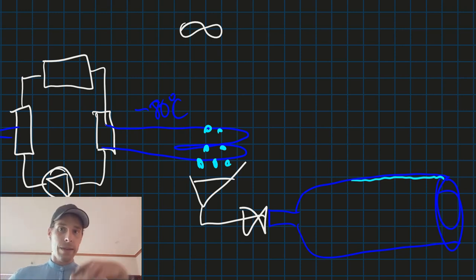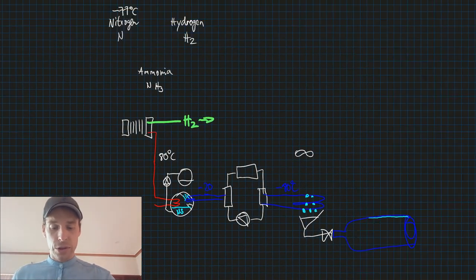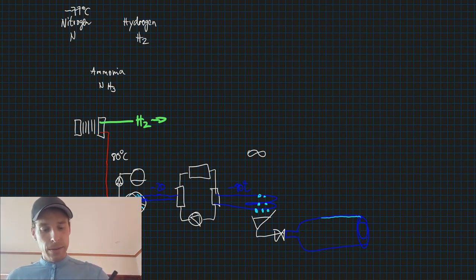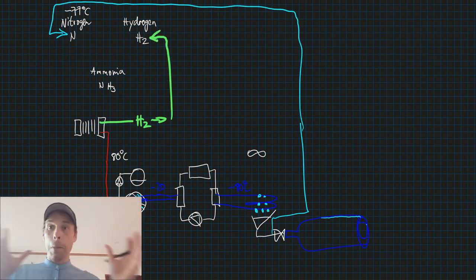Then we close the valve and the temperature rises. Naturally the nitrogen would like to evaporate, but it is a pressure vessel and the nitrogen cannot evaporate. So now we have our nitrogen for our ammonia production. The hydrogen we have from the electrolysis of water. Now how to combine them?